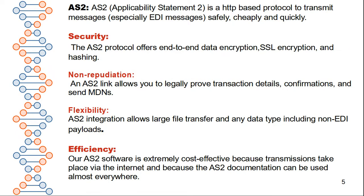FTP uses unencrypted data channels, while SFTP uses encrypted channels to send data from one company to another. Now, AS2 is a very important topic — it stands for Applicability Statement 2 and is based on the HTTP protocol to transmit messages, especially EDI messages, safely and quickly. AS2 provides security, reliability, flexibility, and efficiency. You can also get an acknowledgement using MDN — Message Disposition Notification — confirming the file has been received at the receiver end.